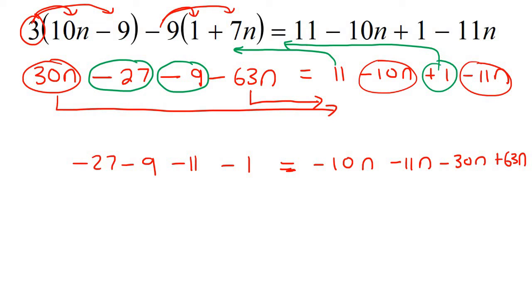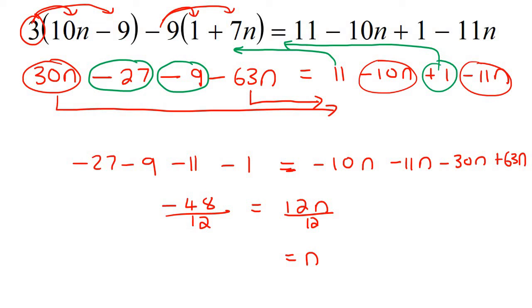Now we can simply combine all of these numbers together. On the left-hand side, that's going to give negative 48. And then on the right-hand side, you're going to say minus 10, minus 11, minus 30, plus 63, and that's going to give you 12n. Then to get n by itself, you just have to divide by 12 so that these two can cancel. On this side you also divide by that same number, so that's going to give us n on the right-hand side. And then 48 divided by 12 is 4, but there's a negative, so this will be negative 4.